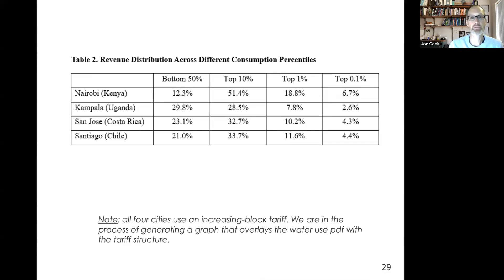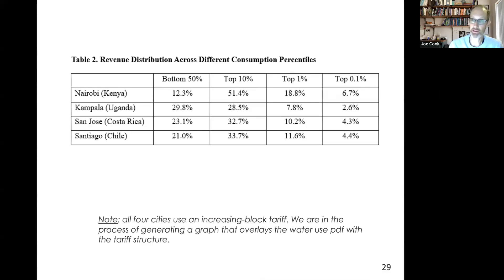When you have unequal distributions and increasing block tariffs — which all four cities have — the utility is financially dependent on water use and bills from the top 10%. In Nairobi, half of the revenue comes from the top 10%. If those households switched to private supply or wells, or cut back substantially, the utility would run a pretty big financial hole.